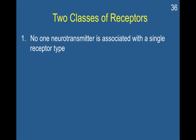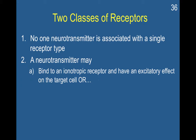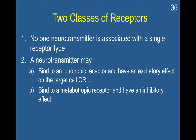Continuing our discussion of receptors, it is important to note that no one neurotransmitter is associated with a single receptor type. Just as no one neurotransmitter is associated with excitatory or inhibitory effects exclusively, no one neurotransmitter is associated with a particular receptor. For example, a neuron may bind to an ionotropic receptor and have an excitatory effect on the target cell, or it can bind to a metabotropic receptor and have an inhibitory effect. The nervous system and our cellular makeup is designed to be very, very flexible.